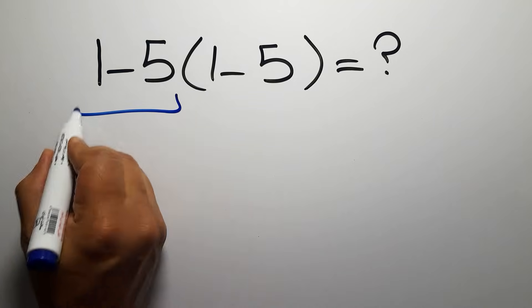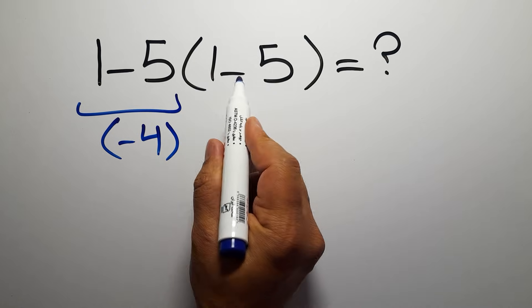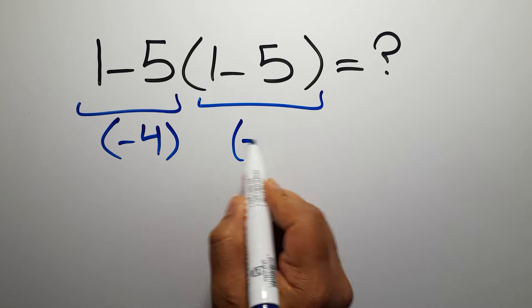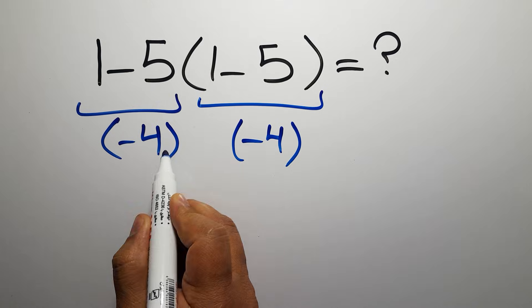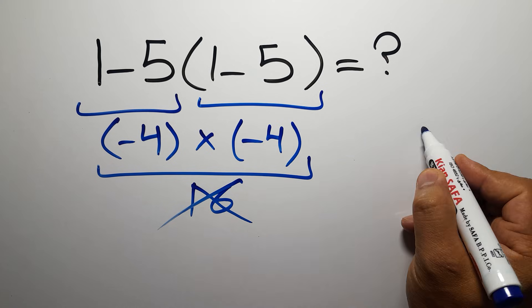1 minus 5 is negative 4, and again here we have 1 minus 5 is negative 4, so negative 4 times negative 4 gives us 16. But this answer is not correct because according to the order of operations...